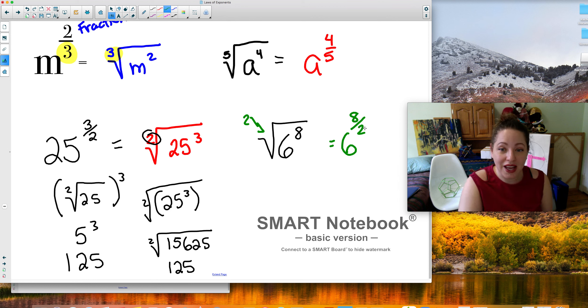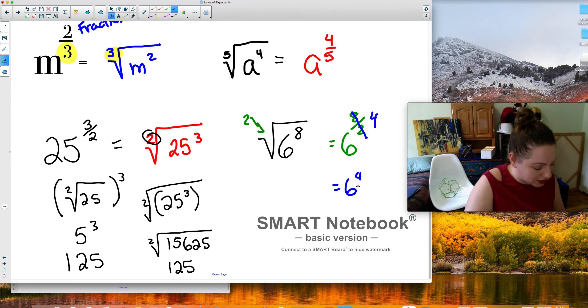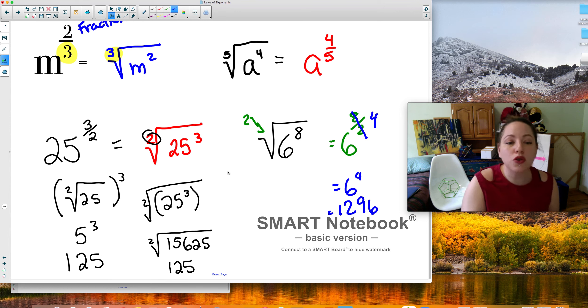Wait, this can be simplified. 8 divided by 2, that simplifies to 4. So this is really equal to 6 to the 4th power and 6 to the 4th power is 1296. So you have to be able to write back and forth to be able to simplify things. And that's the goal. That's it.